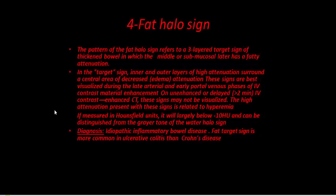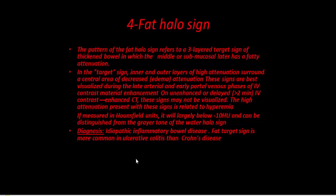The fat halo sign refers to a three-layered target sign of the thickened bowel, in which the middle or submucosal layer has fatty attenuation. In the target sign, the inner and outer layers of high attenuation surround a central area of decreased attenuation. This sign appears in the late arterial and early portal venous phase after IV contrast. With delayed imaging more than two minutes, the sign may not be visualized. The high attenuation is related to hyperemia, measured in Hounsfield units, and can be distinguished from the gray tone of the water halo sign.